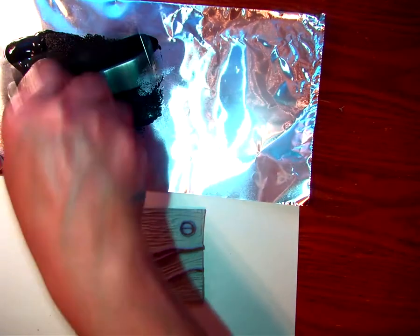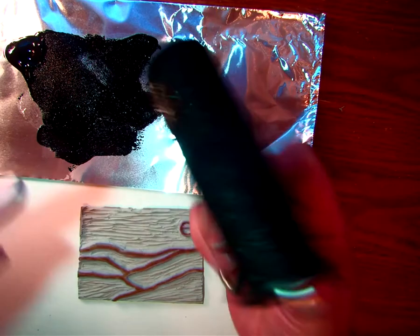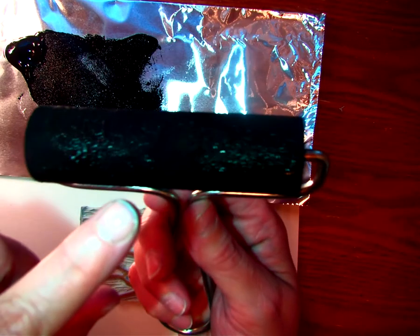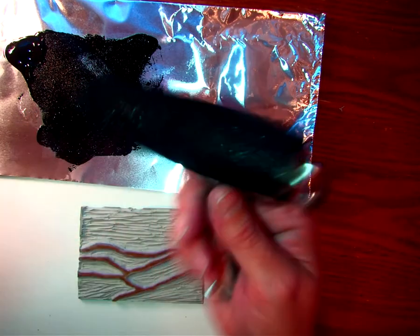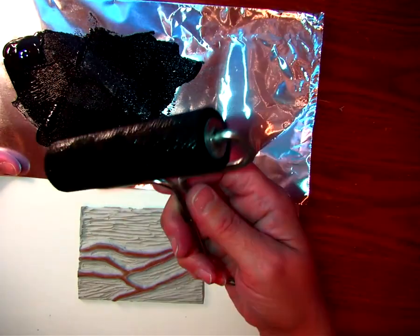I'm going to go ahead and get my brayer inked up. Remember, when we do this, we want ink all the way around. And you can see, if I hold this up here, there are some empty spots that aren't shiny. That means those don't have enough ink on it. So we want to make sure that we're getting enough ink on here.